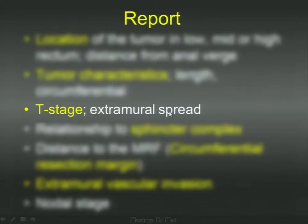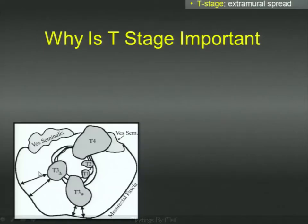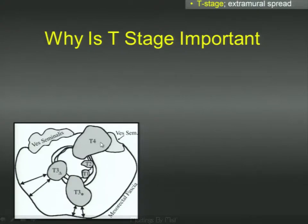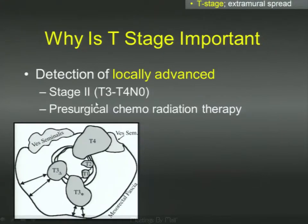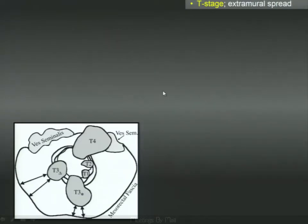The T stage is a very important aspect of what we can do with MR. T1 is when the tumor is confined to less than the submucosa. T2 is when it invades the muscularis but doesn't go through it. T3 is when it goes through the muscularis and extends into the mesorectal fat. T4 is when it extends into adjacent organs. With MR, you cannot reliably distinguish between T1 and T2, but that doesn't matter because both are treated with surgery. The real distinction is between T2 and T3, as T3 prompts neoadjuvant chemoradiation before surgery.